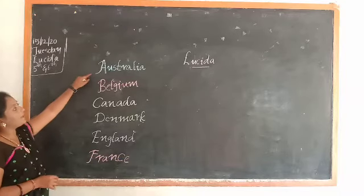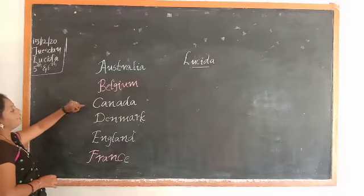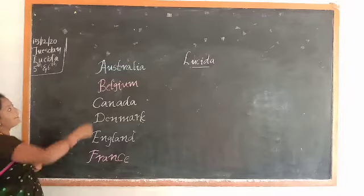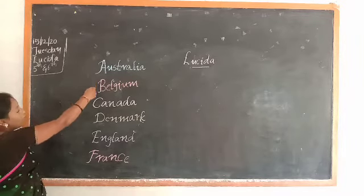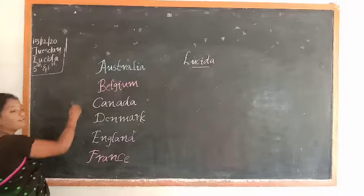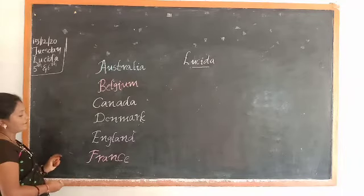So the first words are: Australia, Belgium, Canada, Denmark, England, France. Here you can observe — they are starting in alphabetical order. Next: Germany.